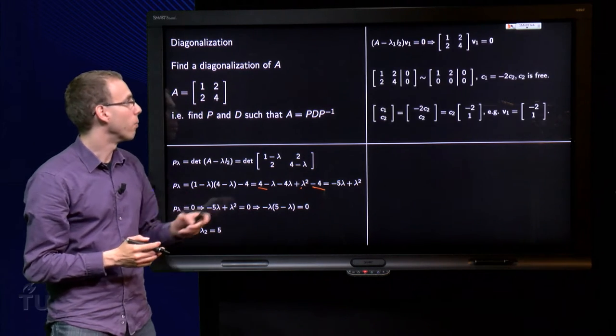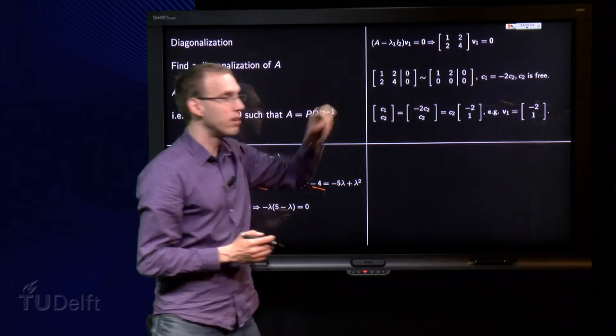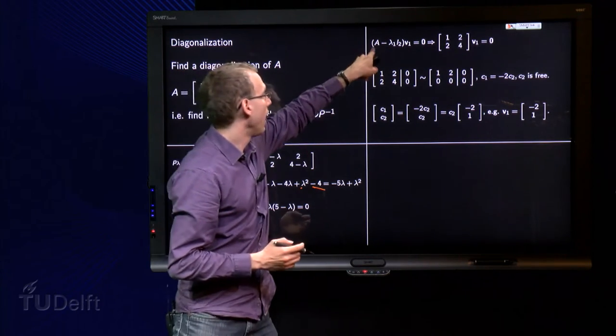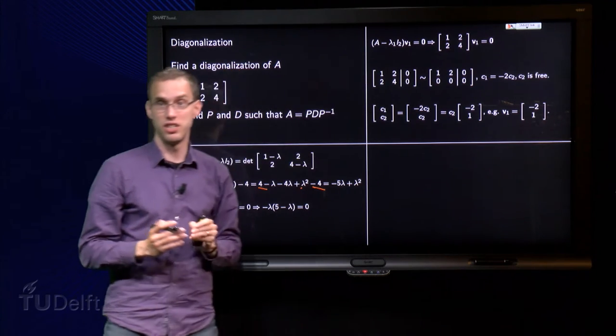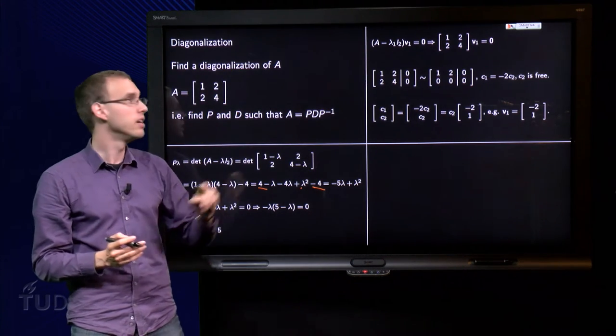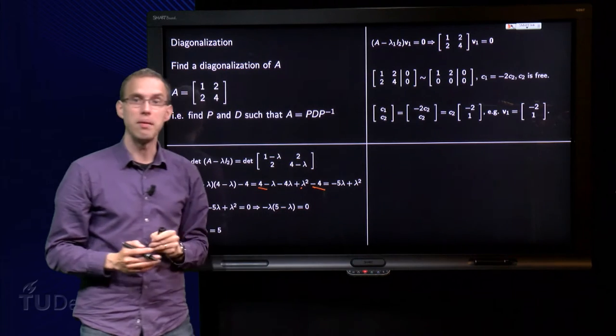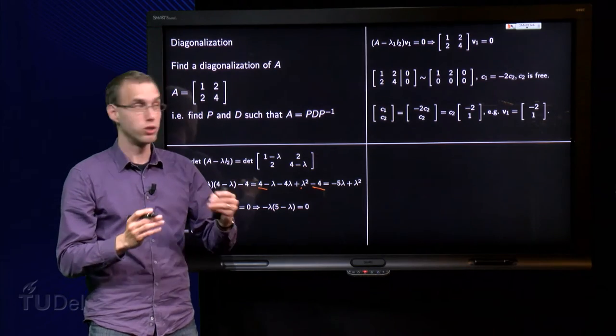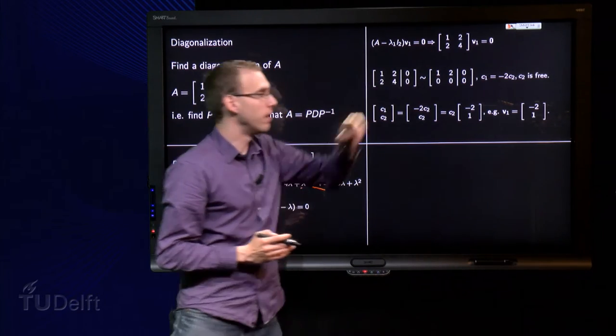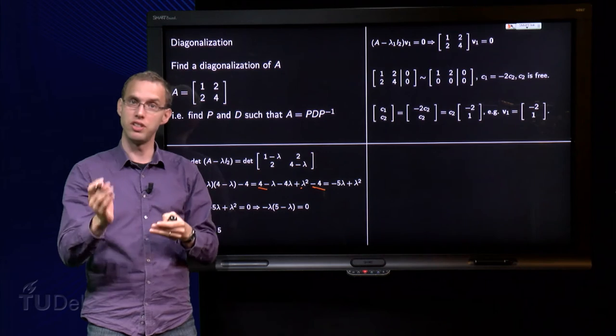Well, we start with lambda 1, and we know that we have an eigenvector if A minus lambda 1 times the identity matrix times the eigenvector equals the zero vector. So, we compute A minus lambda 1 times the identity matrix. Well, since lambda 1 equals 0, that's of course just A, so we have this matrix times V equals zero.